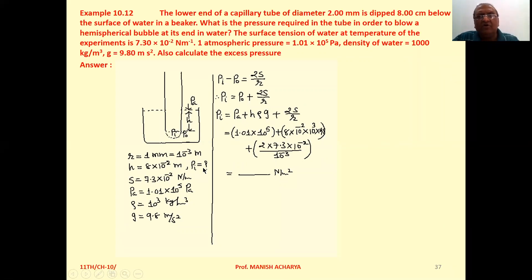The inside pressure we don't know; we have to calculate it. Surface tension is 7.3 × 10⁻² N/m. At the surface of the liquid in the container, the pressure is atmospheric pressure because it is directly in contact with the atmosphere, that is 1.01 × 10⁵ Pascal.